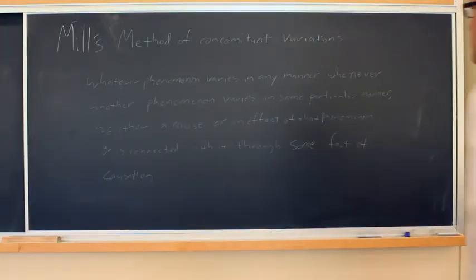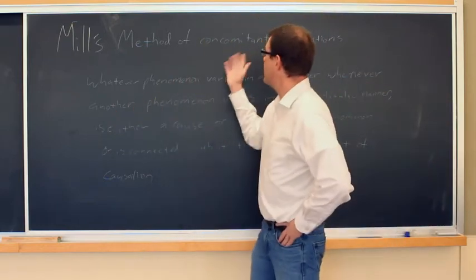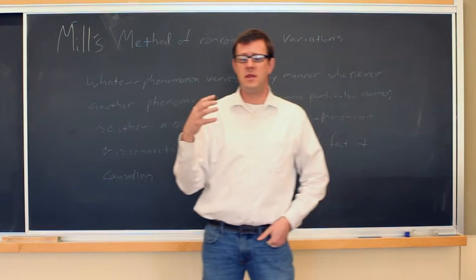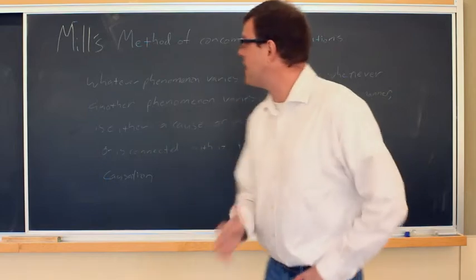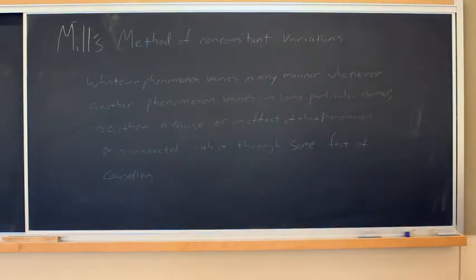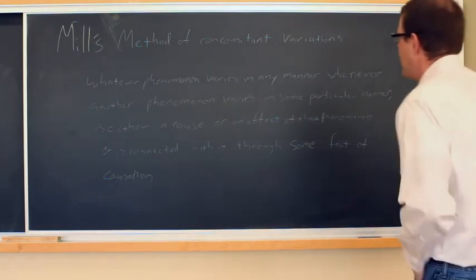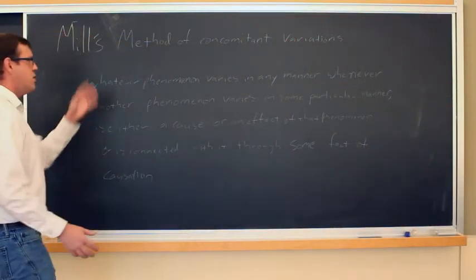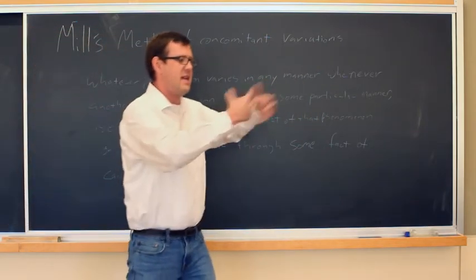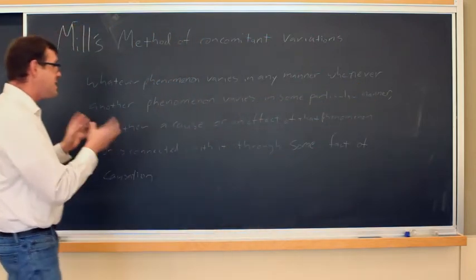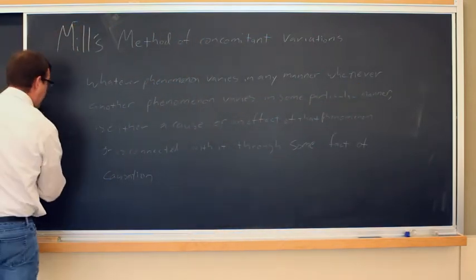Mill's method of concomitant variations. Concomitant means something naturally associated or that naturally goes along with something else. The definition: whatever phenomenon varies in any manner whenever another phenomenon varies in some particular manner is either a cause or an effect of that phenomenon, or is connected with it through some fact of causation. When symptoms vary in levels and a potential cause varies in an associated way, that's probably the cause or causally related.